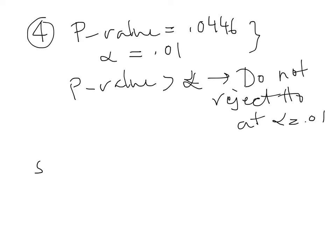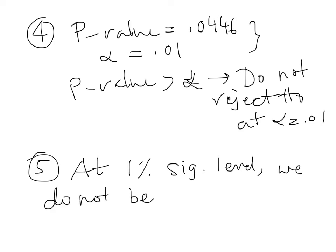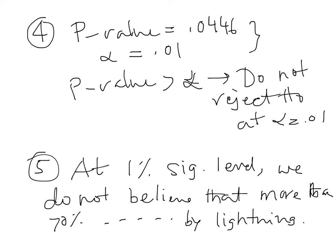Then of course the last step, you write a statement at 1 percent significance level. So we do not believe that more than 70 percent of all faults in transmission line caused by lightning. So we already have seen that this is our conclusion.